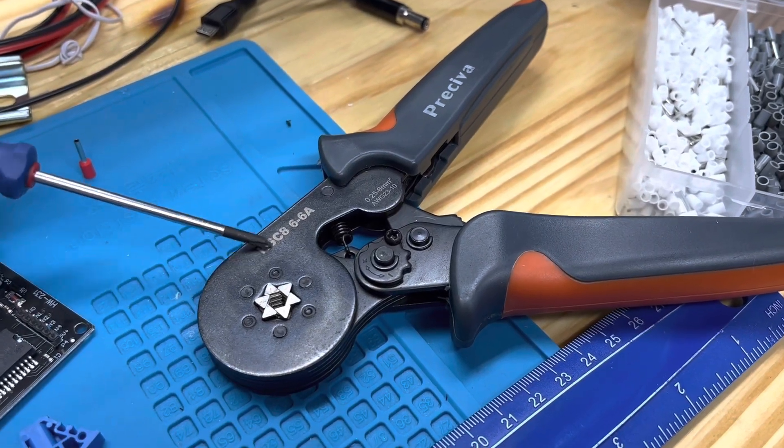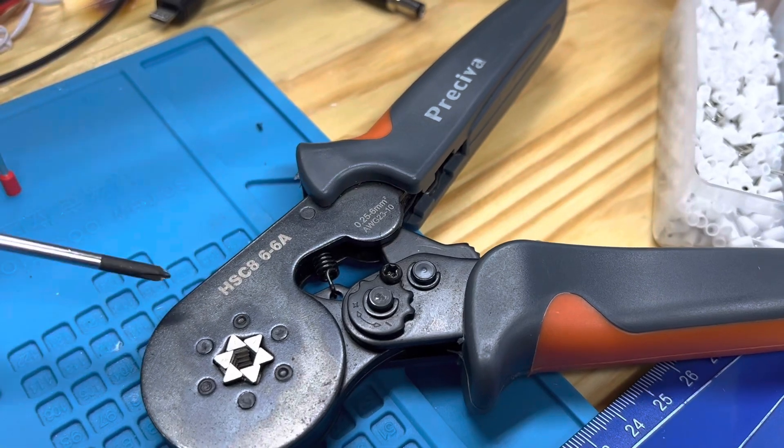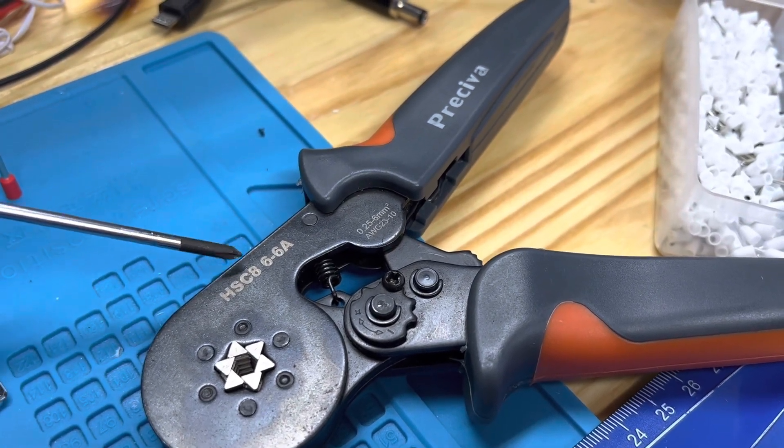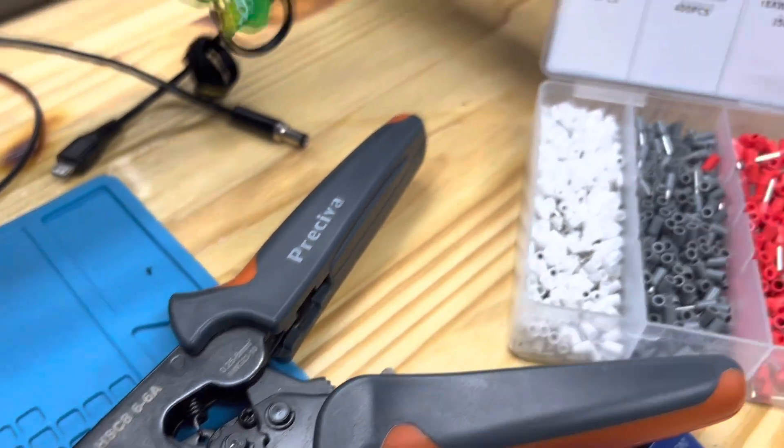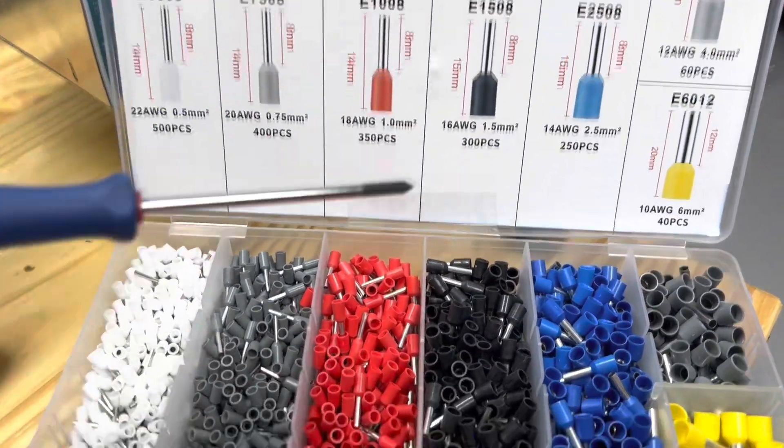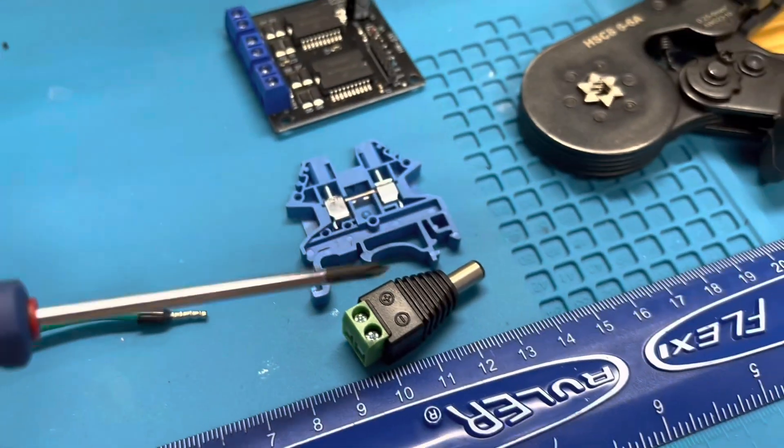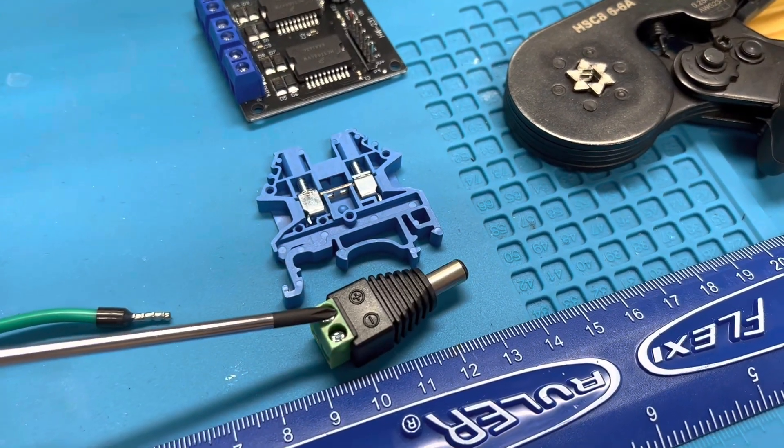In this video we'll give instructions for using the iron sphincter. This one is the Perceva brand HSC86-6A for making terminals using ferrules like these to have a result like this that's compatible with terminals like this one.